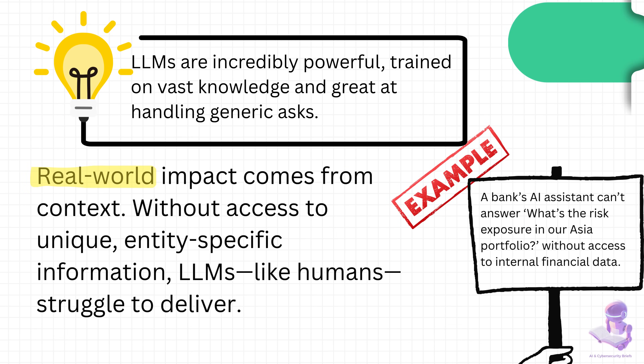Large language models are great at handling general questions, things anyone could ask. But in the real world, that's not enough. To be useful, they need access to the specifics that matter to you. Without that context, their answers fall short. Take a bank, for example. An AI assistant can't answer 'what's our risk exposure in Europe' if it's blind to the bank's own financial data. This is why context is everything.